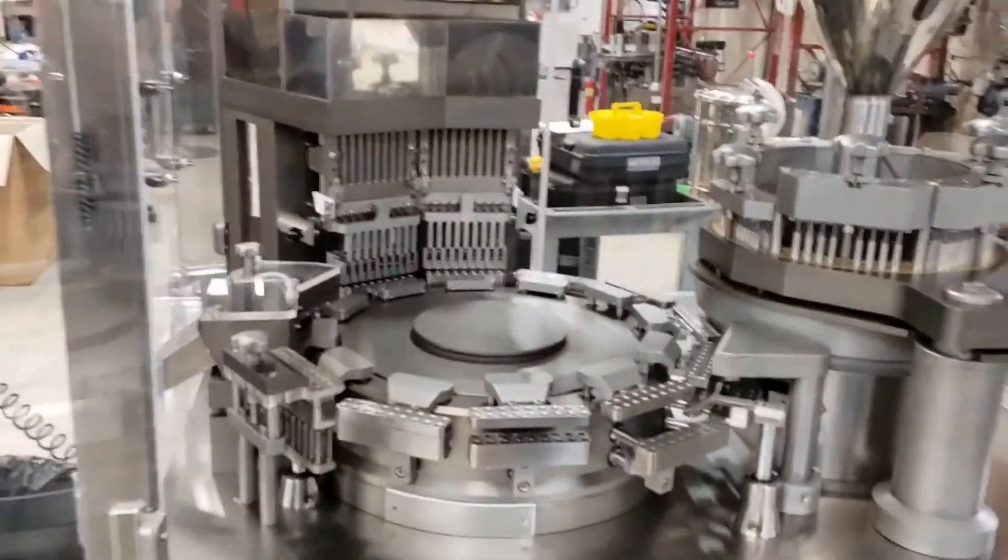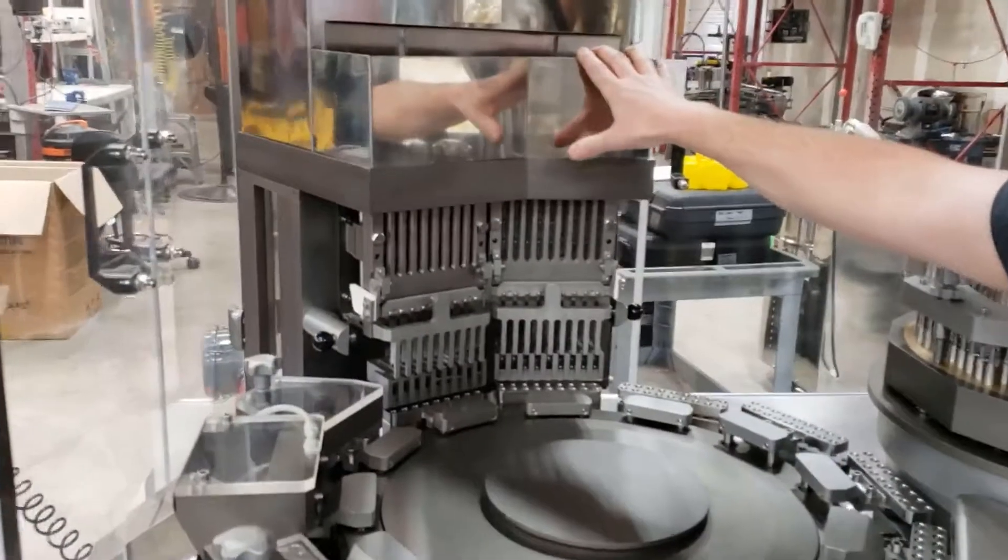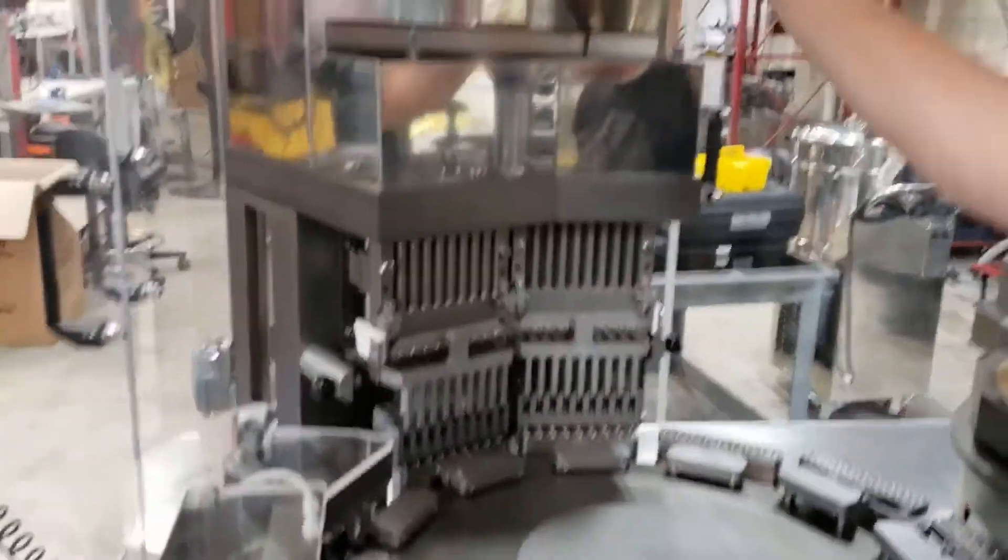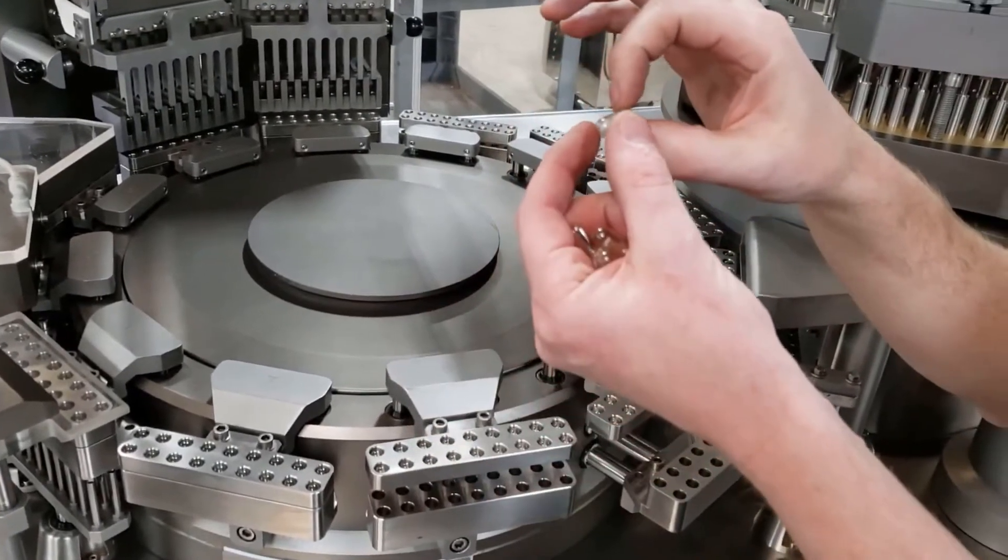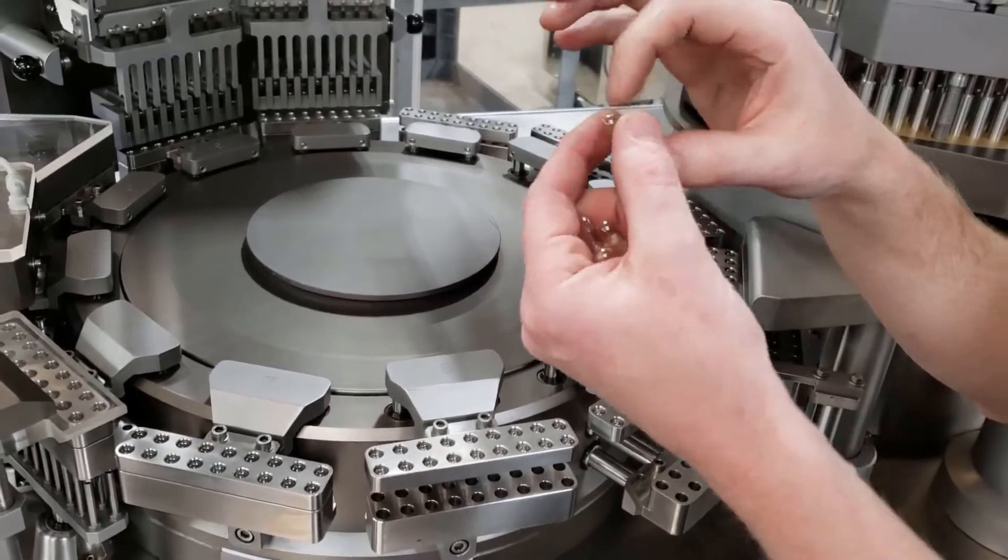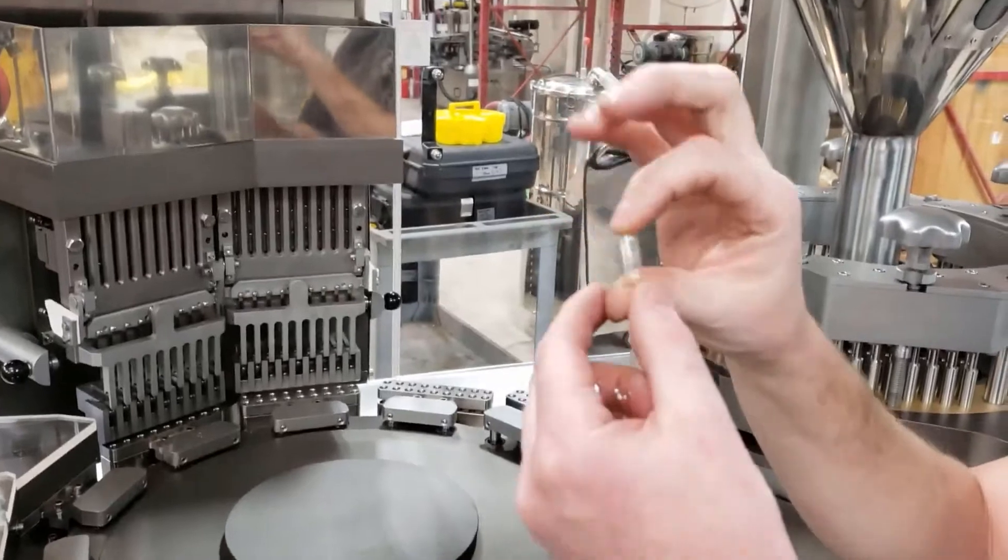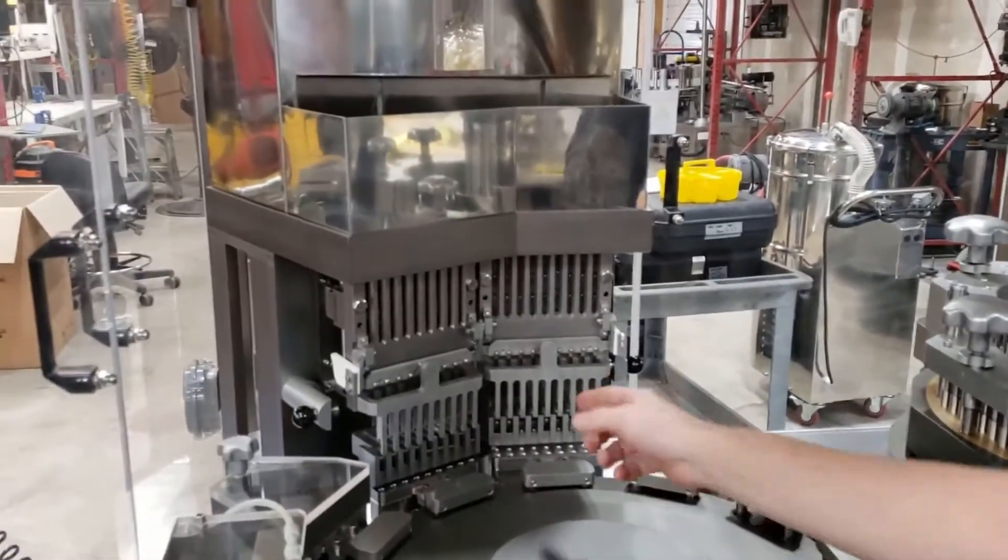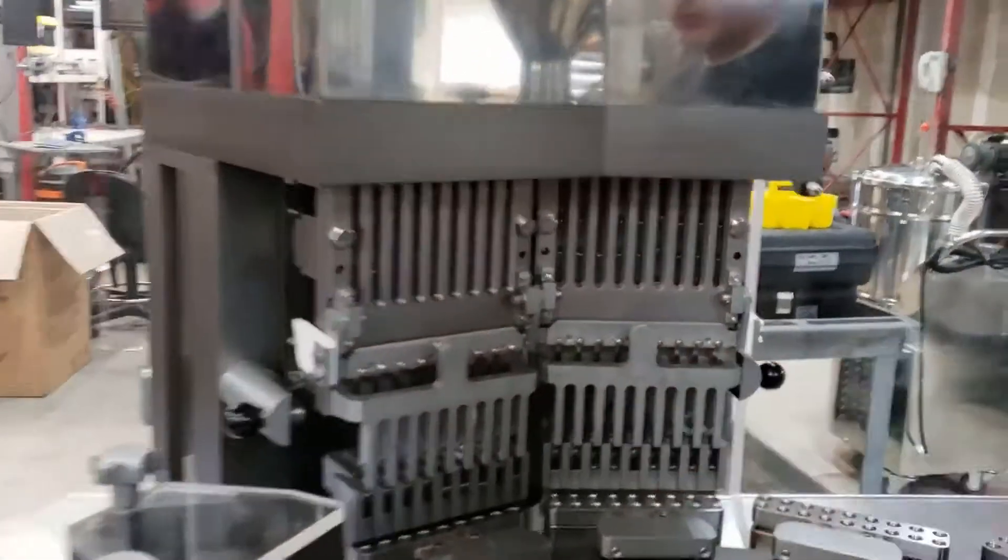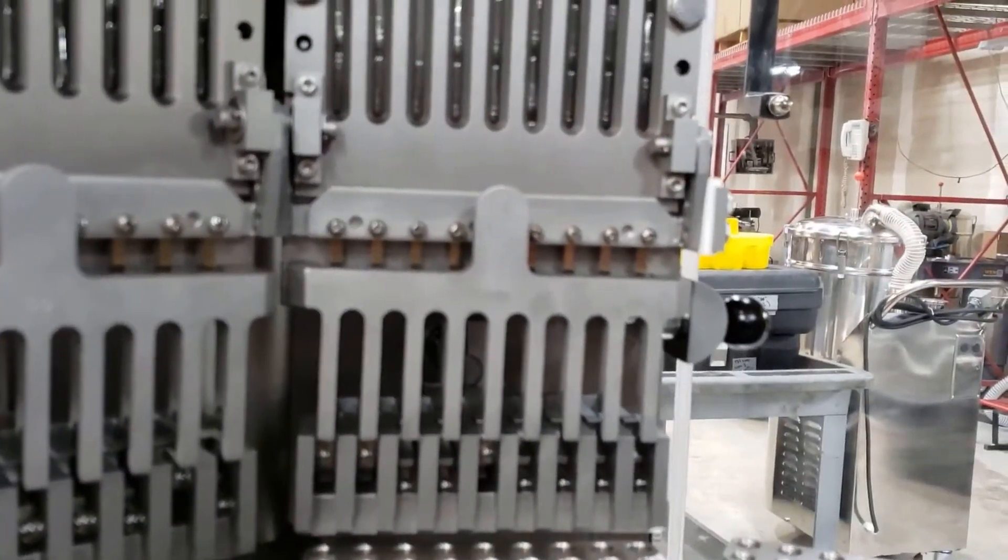We start with a capsule hopper here. So capsules, as you may or may not know, they come already together. They come in what we call pre-locked state. So they come apart really easy, but then if you bump them together, they come along. So we have different sizes of capsules. Right now we're running double zero. You see on the magazines here.